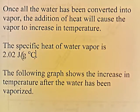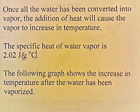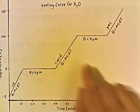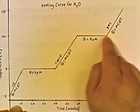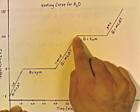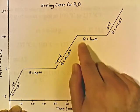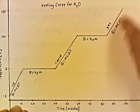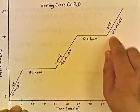Once all the water has been converted into vapor, the addition of heat will cause the vapor to increase in temperature. The specific heat of water vapor is 2.02 joules per gram degree Celsius. The following graph shows the increase in temperature after the water has been vaporized. All along the flat section, the liquid is being converted into vapor, then once all liquid becomes gas, Q equals MC delta T can be used to calculate the energy needed to raise the temperature of the gas.